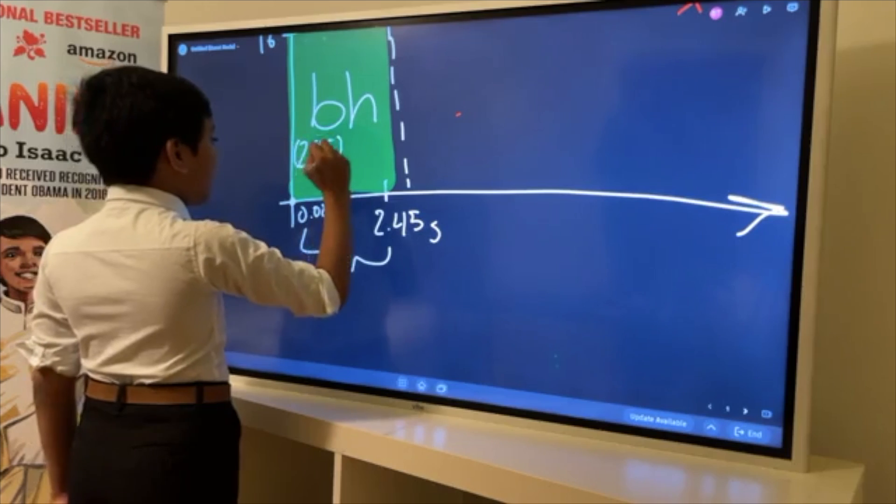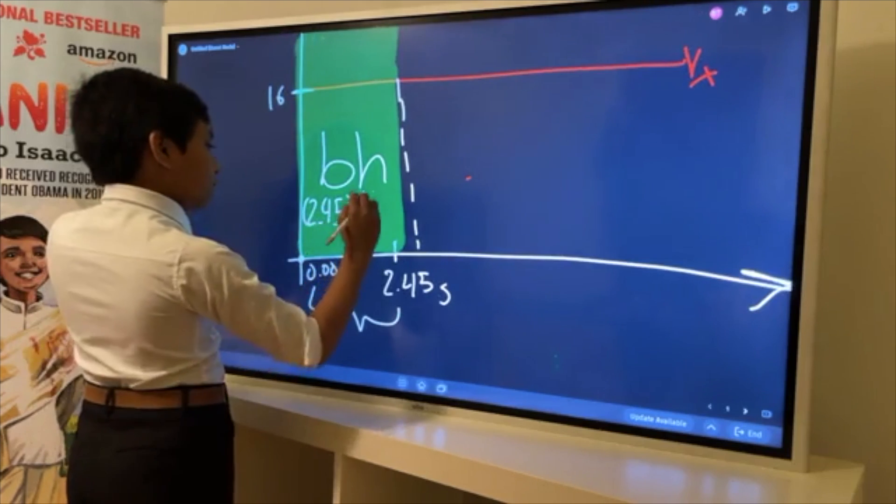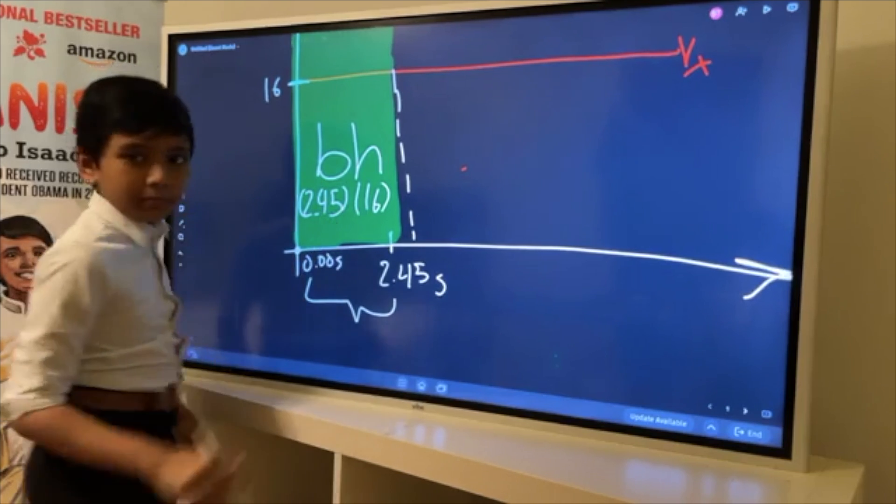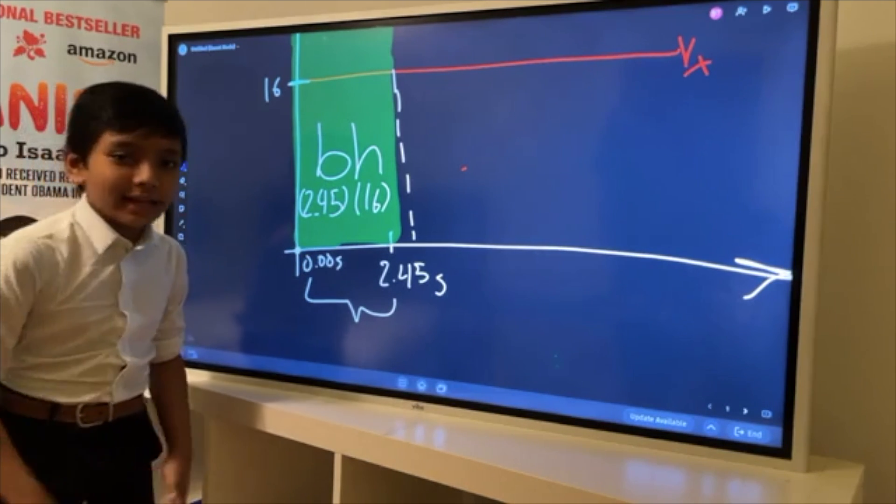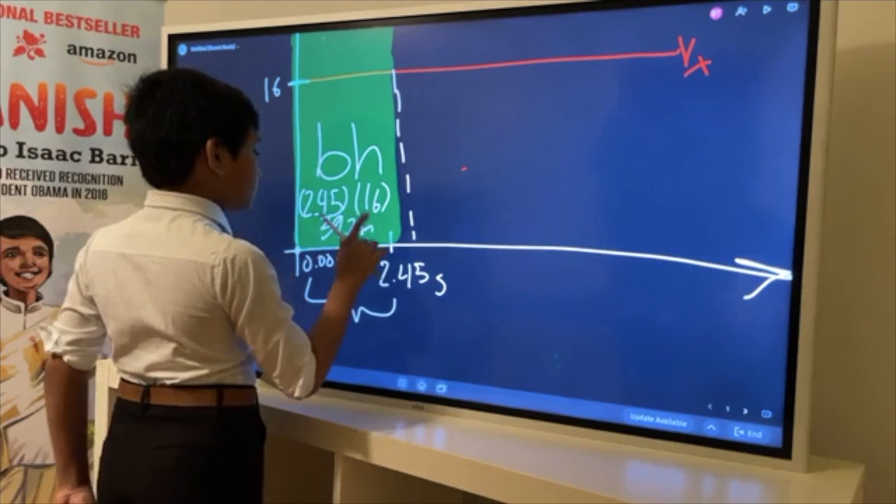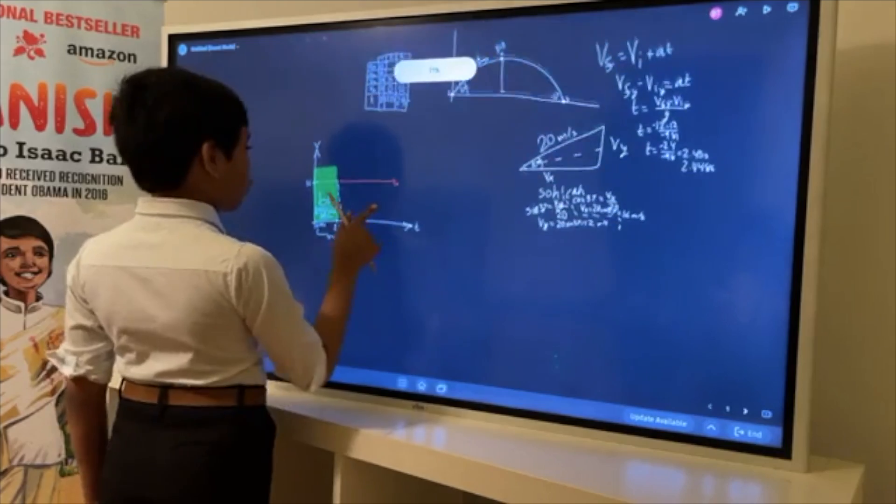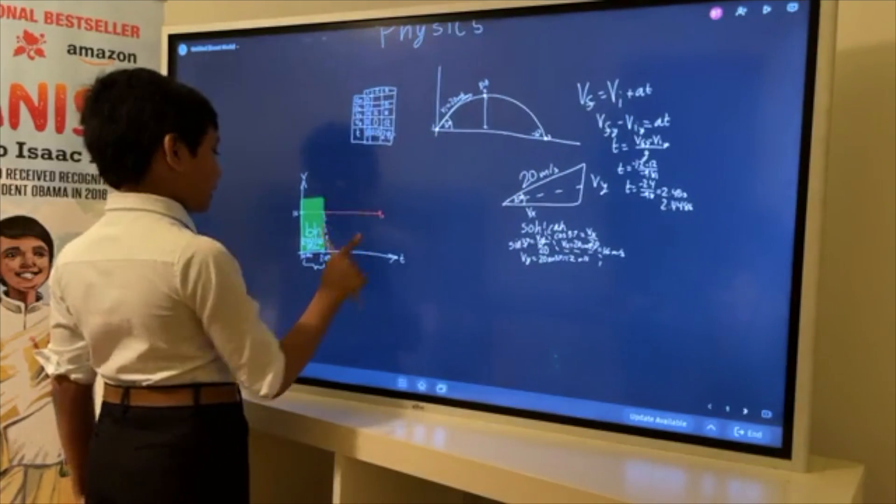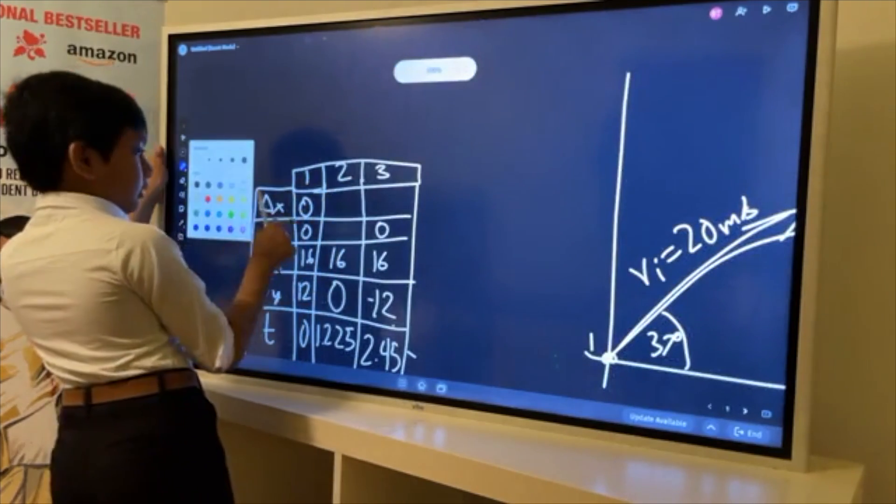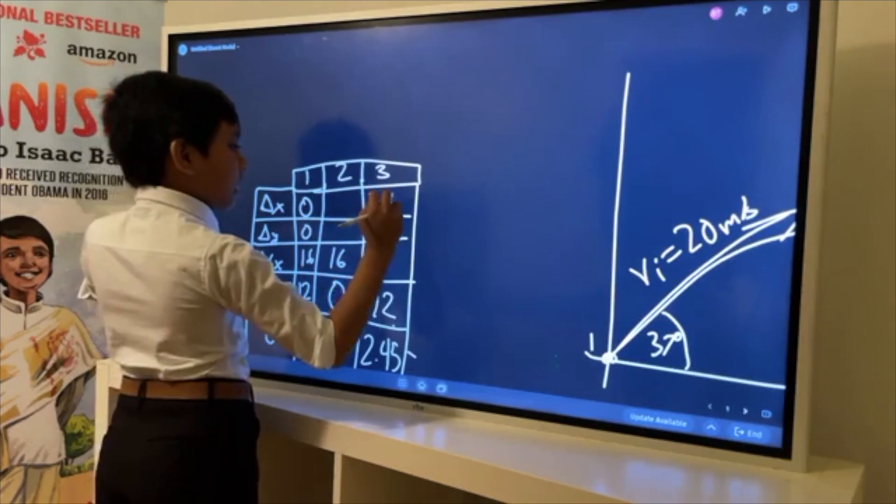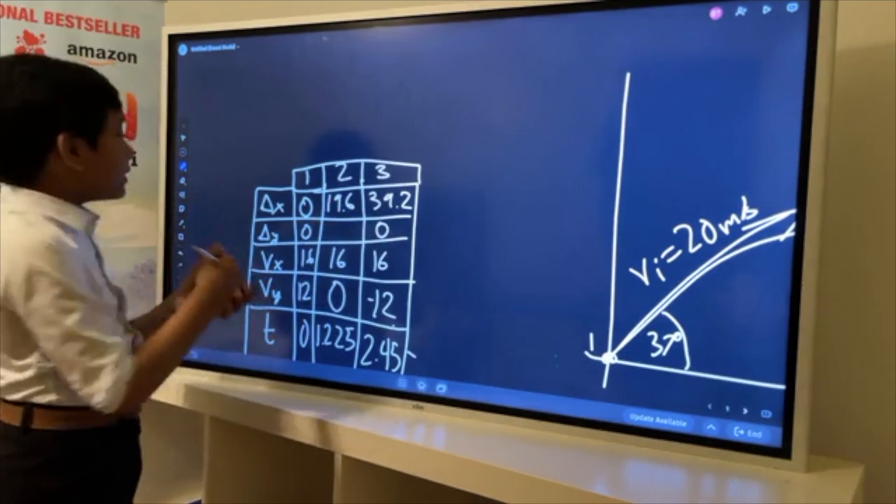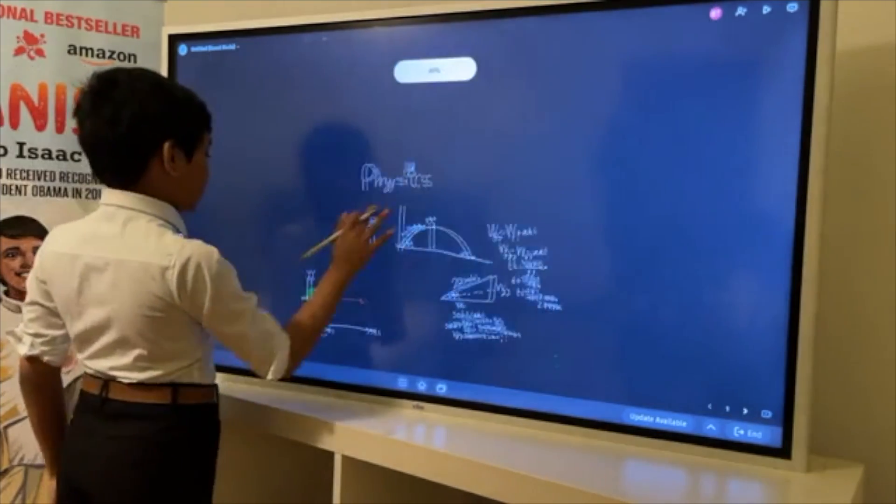We get 39.2 meters. Now the y is slightly different. We know it's 39.2, and we have that over here giving us 19.6. But now this is the only thing that remains.